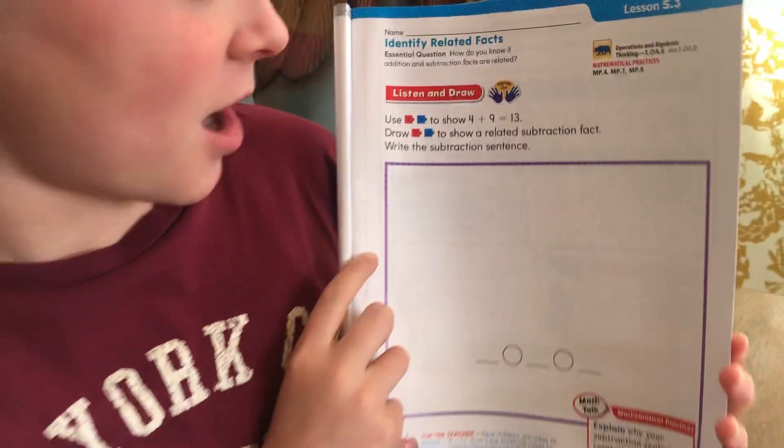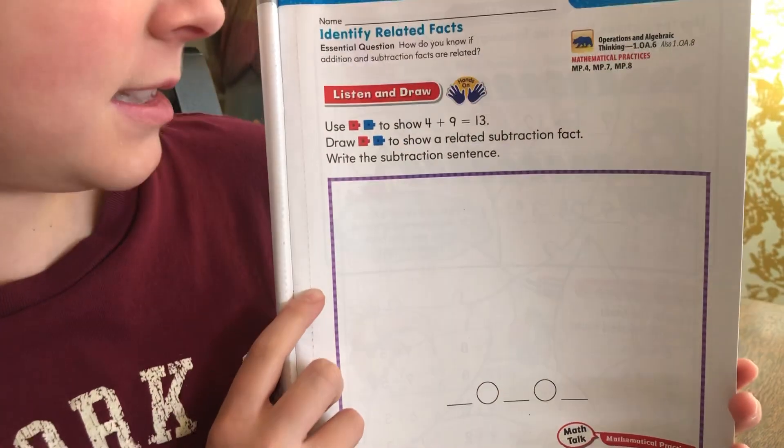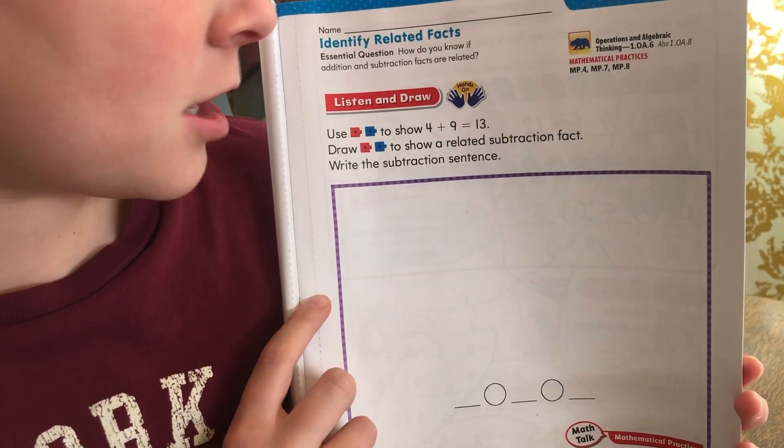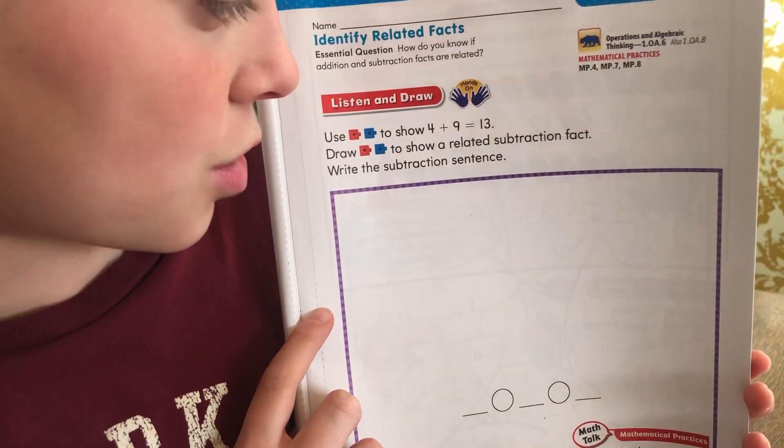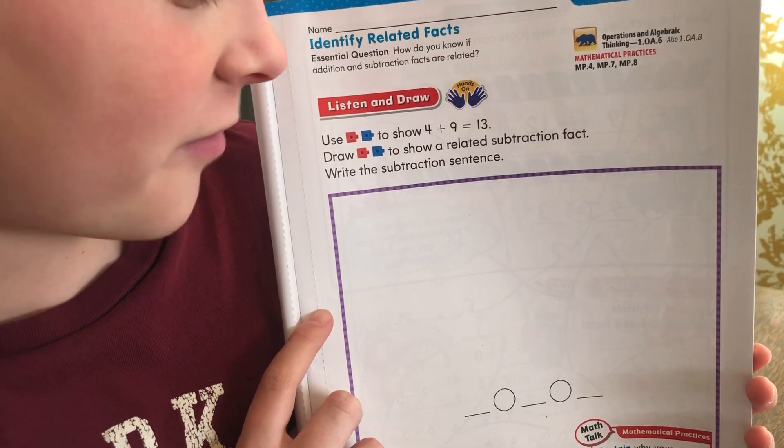It says, use models to show 4 plus 9 equals 13. Draw models to show a related subtraction fact.